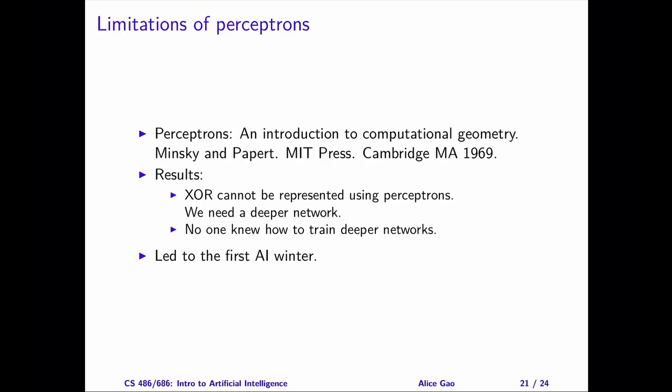Unfortunately, in the 1960s, people discovered some limitations of perceptrons. This discovery had a huge impact on research towards artificial neural networks. Despite the hype around perceptrons at the time, some people were skeptical about it. For example, Marvin Minsky, who was the founder of the MIT AI lab, and Seymour Papert, who was the director of the lab at the time.